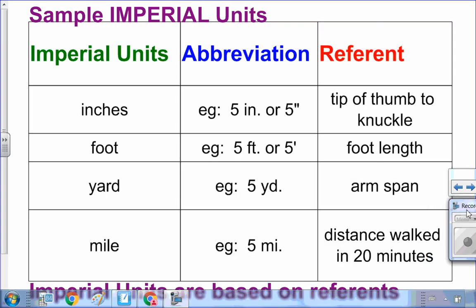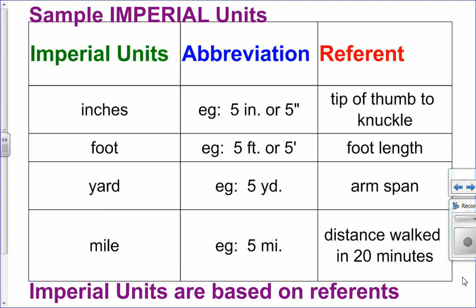Now imperial units are based on referents and what a referent is, it's a way of visualizing what a measurement is. So for example, inches. Inches we can denote with the word IN or with these two little tick marks. If you look at your finger from the tip of your thumb to the knuckle, that's about an inch.